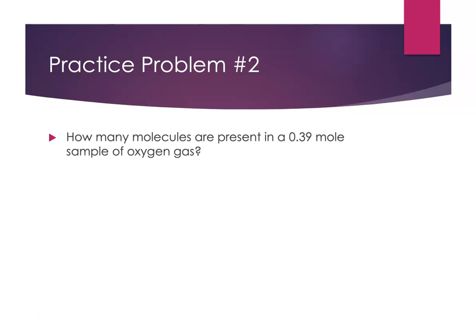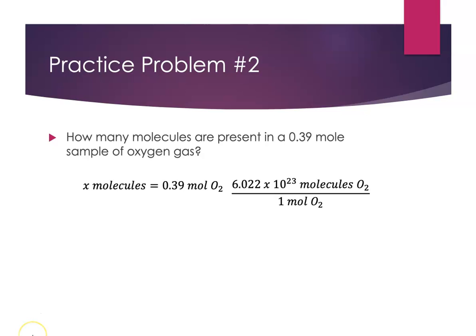Practice problem: how many molecules are present in a 0.39 mole sample of oxygen gas? Solving for molecules: x molecules equals 0.39 moles of O₂, multiplied by Avogadro's number molecules per mole. The unit moles of oxygen cancels, leaving molecules. Since 0.39 moles is less than one, I'm expecting an answer less than Avogadro's number. I get 2.4 times 10 to the 23rd oxygen molecules — two sig figs, appropriate units.